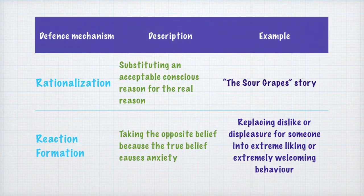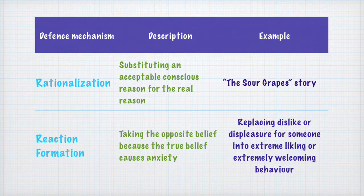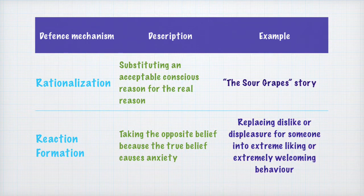Rationalization is another defense mechanism which includes substituting an acceptable conscious reason for the real reason. When you rationalize, you give a reason for something which may not be the real reason, because the real reason is too overwhelming or anxiety-provoking to handle. An excellent example of rationalization is the story of the sour grapes. When the fox is not able to reach the grapes hanging on the grapevine, it reasons that it's for good that it could not have the grapes because they would have been sour anyway.